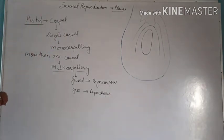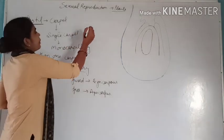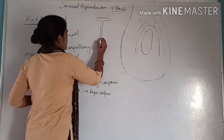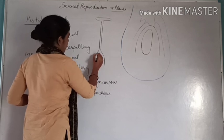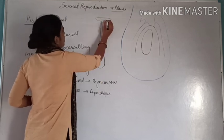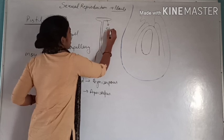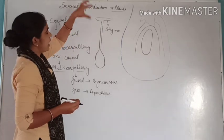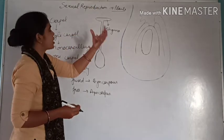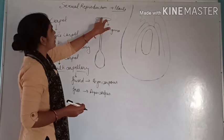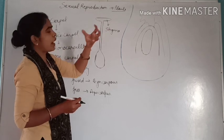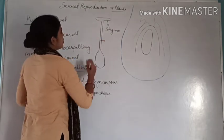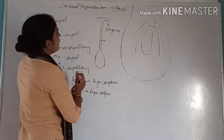Now the structure of a pistil or a carpel — a carpel can be divided into three parts. The first part is stigma. The stigma acts as a platform for the landing of the pollen grains. When pollen grains pollinate by air or by insects, pollen grains come here on the stigma. The stigma is feathery or sticky, which can stick with the pollen grains easily. Below the stigma, the cylindrical portion is called the style.